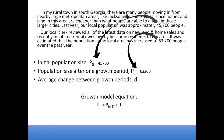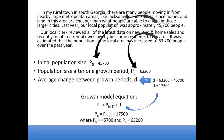Those two values allow us to determine how much the population is increasing in one period by taking their difference. Subtracting those two values gives us a common difference of 17,500 people, which we can substitute into the general population growth model equation and express it with that common difference.